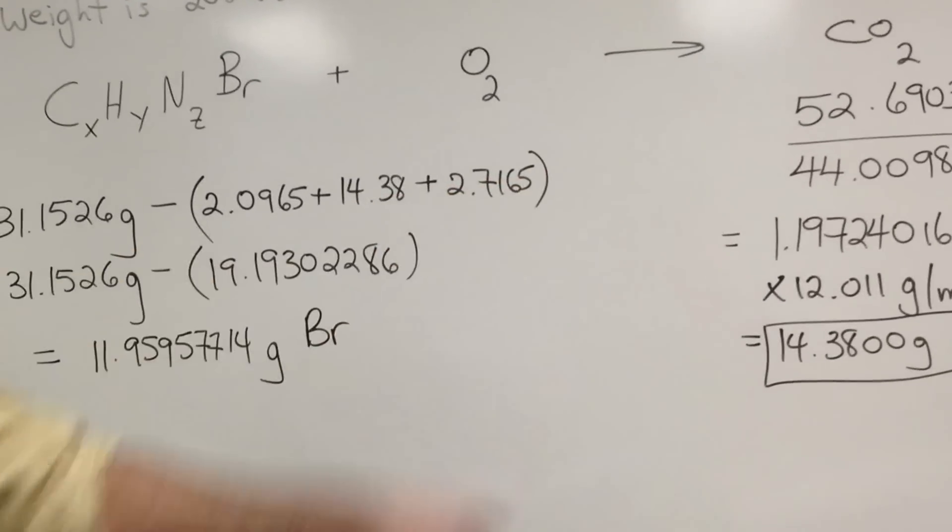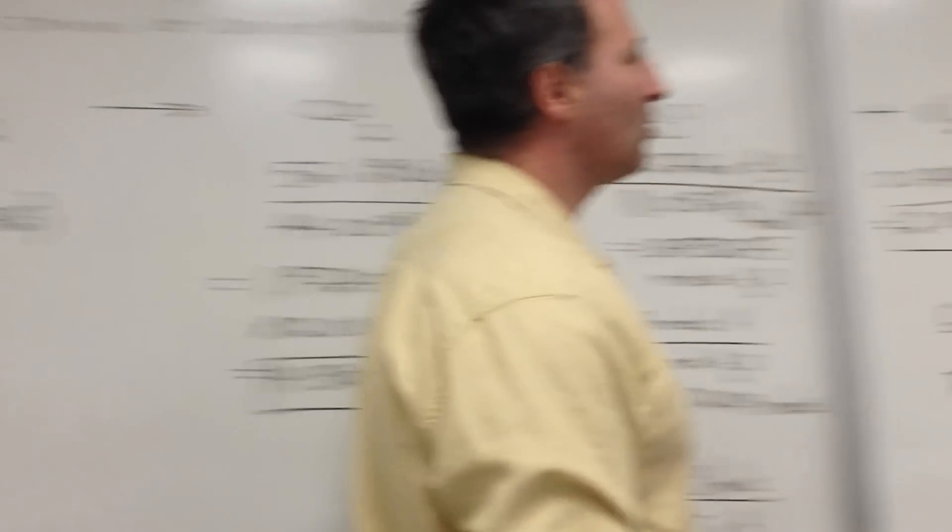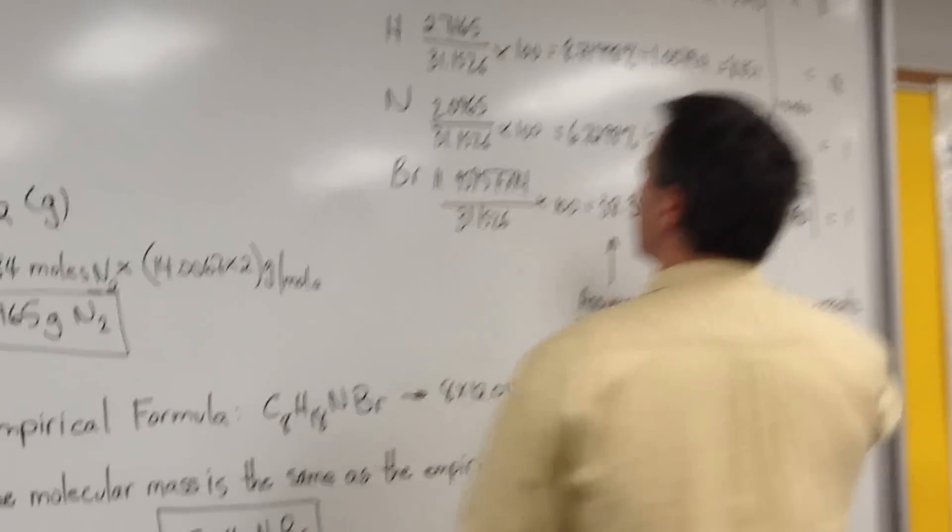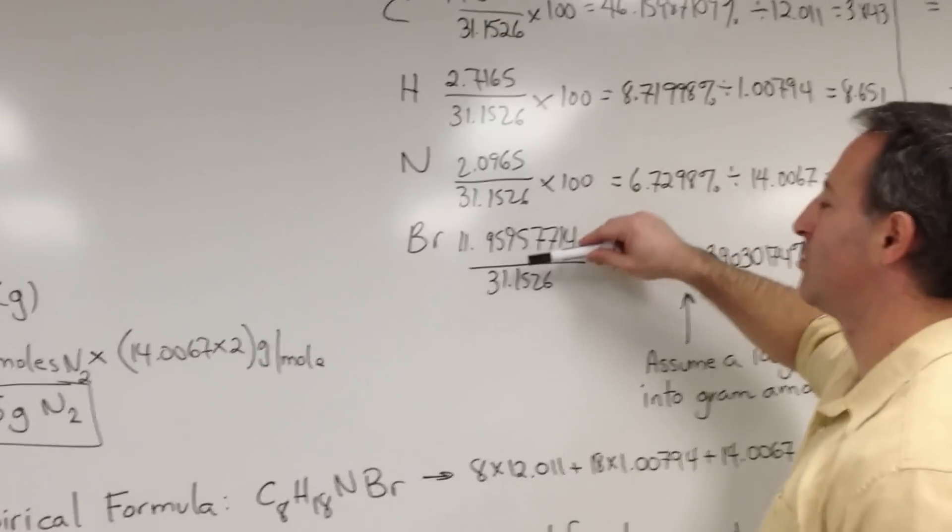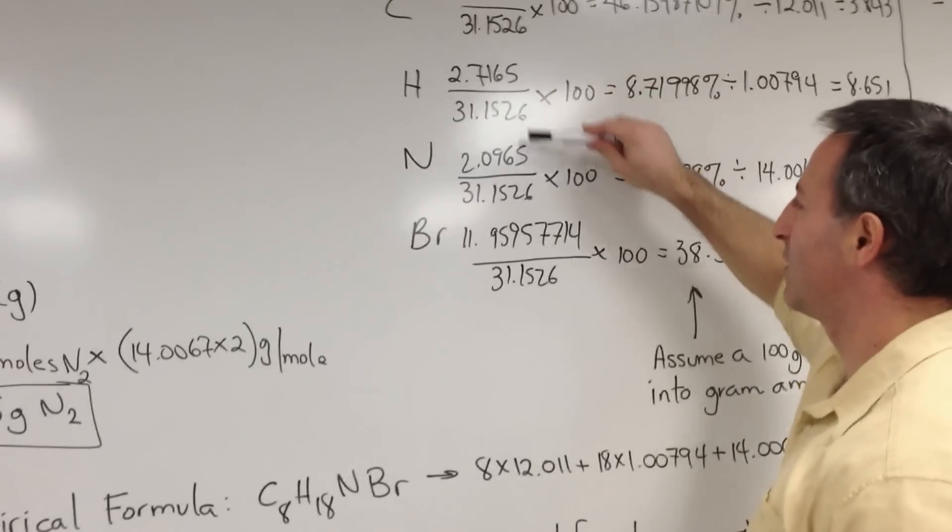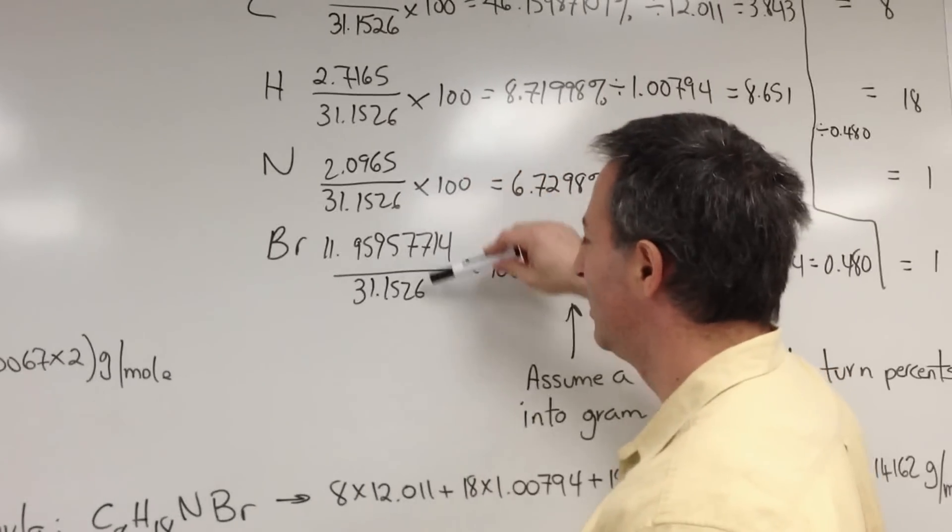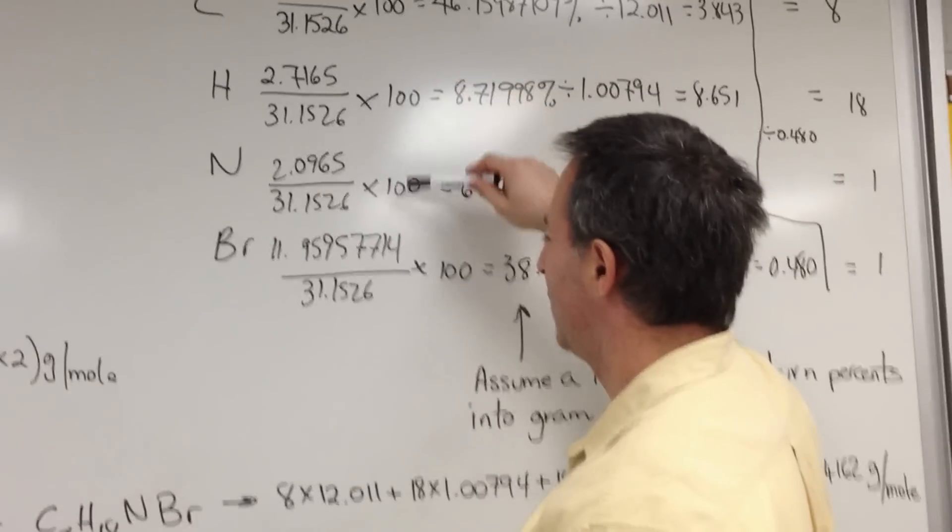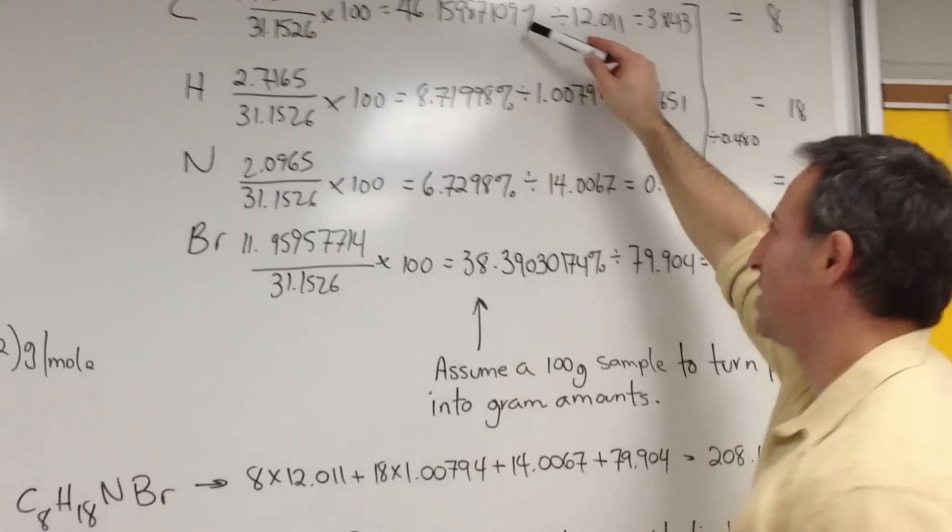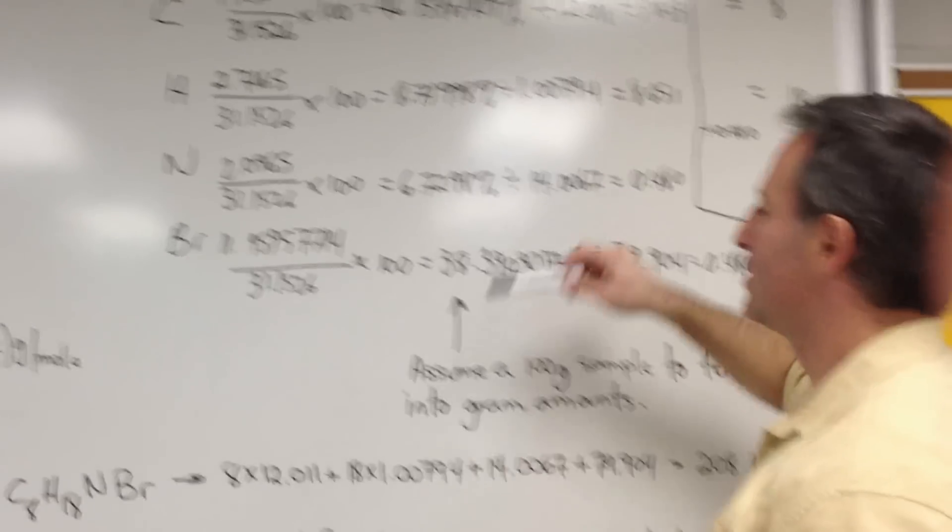Armed with these four numbers, we now calculate the percent composition of the molecule: carbon, hydrogen, nitrogen, bromine. Notice how we divide by the mass of sample that was burned each time. We multiply by 100, and we obtain a percentage for each of these substances.